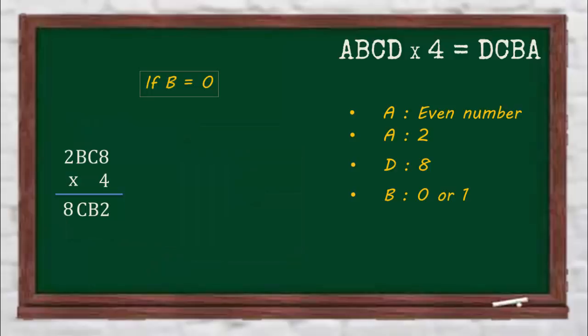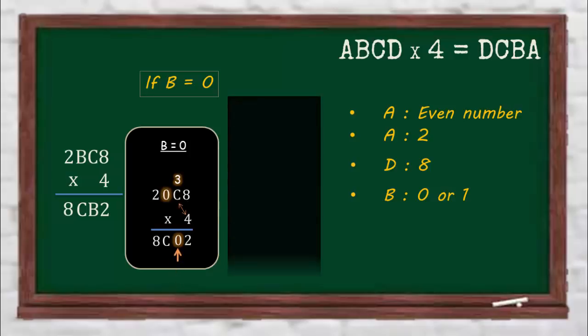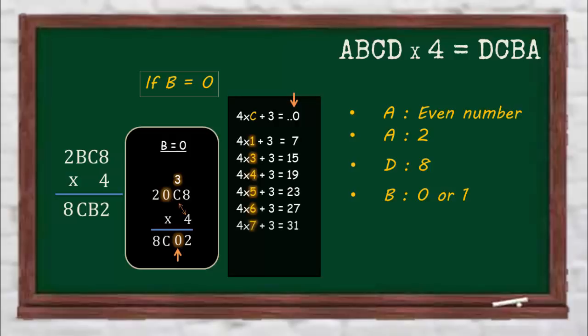Consider the case that B equals 0. 4 times 8 is 32, so we carry the 3. Now 4 times C plus 3 should give a number that has 0 as the rightmost digit. But no value of C gives a multiplication result with 0 as the rightmost digit. So the whole case of B equals 0 can be eliminated.